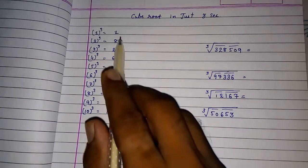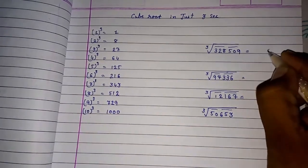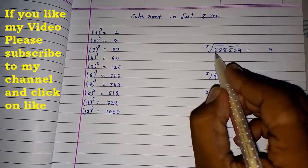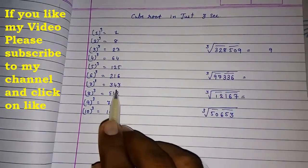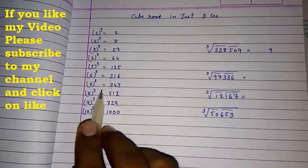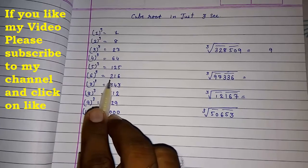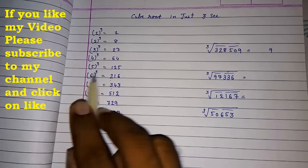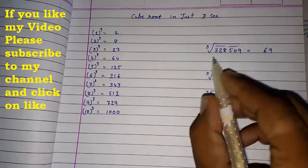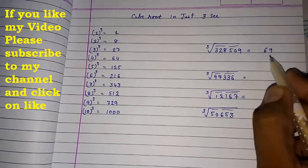Look here. 9 is there. So which cube is ending with 9? 9. So last digit will be 9. And 328. So where 328 will appear before this. Means here it will come between 6 and 7. So we have to select the previous number. That is 6. So the cube root of 328509 is 69.